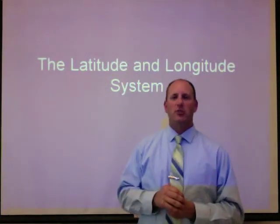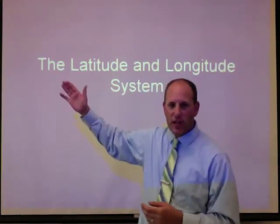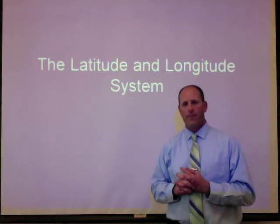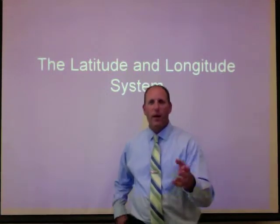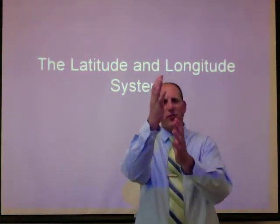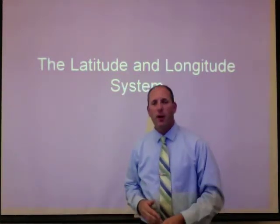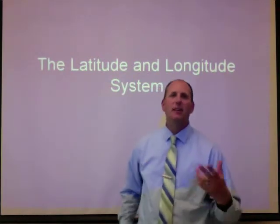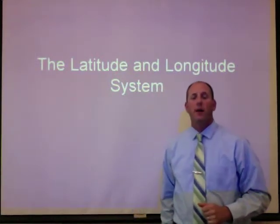So in your notebooks, open to the next available right page. On the top of that right page, here's our title: the latitude and longitude system — go ahead and write that down. Once you have that written down, take your writing utensil, indent about a third of the page — not quite half, about a third — and draw a line separating your paper all the way down into a left and right column. These are going to be modified CAT notes. This is how I want you to be taking notes for this class.